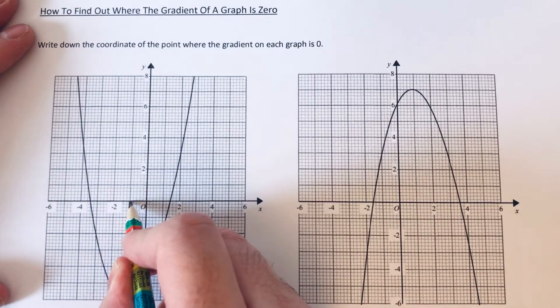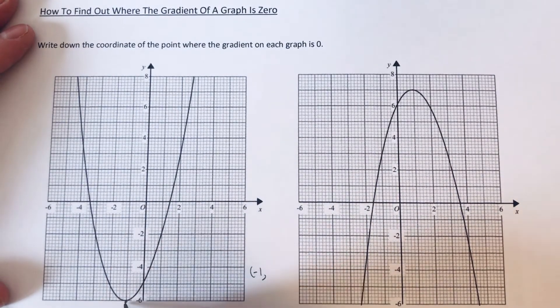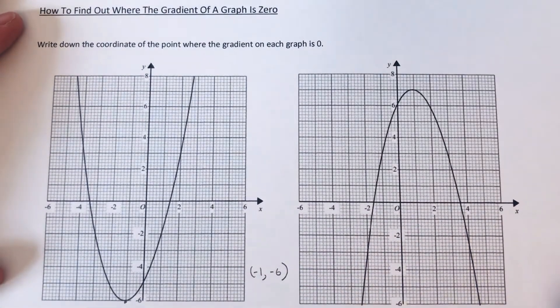The x coordinate is minus 1 and the y coordinate is minus 6. Okay, so let's move on to example 2 then.